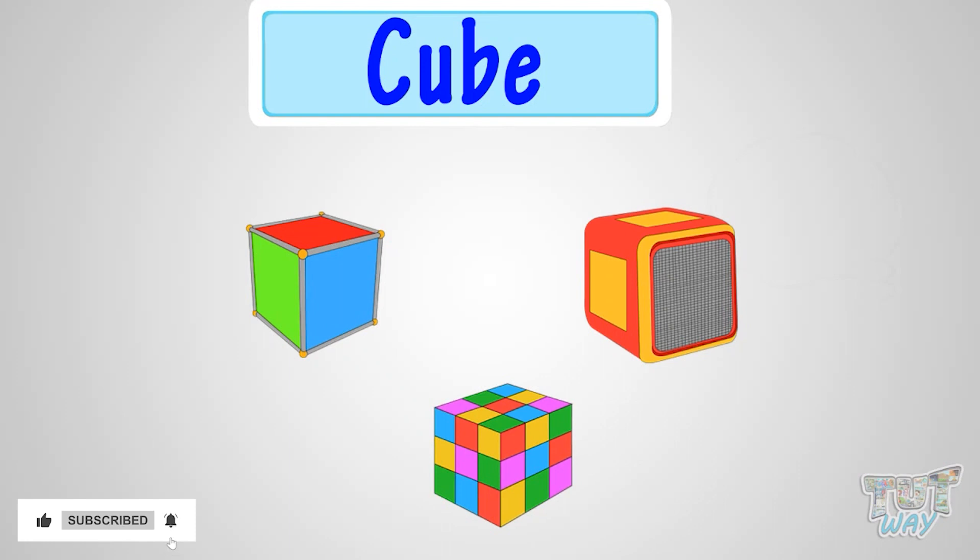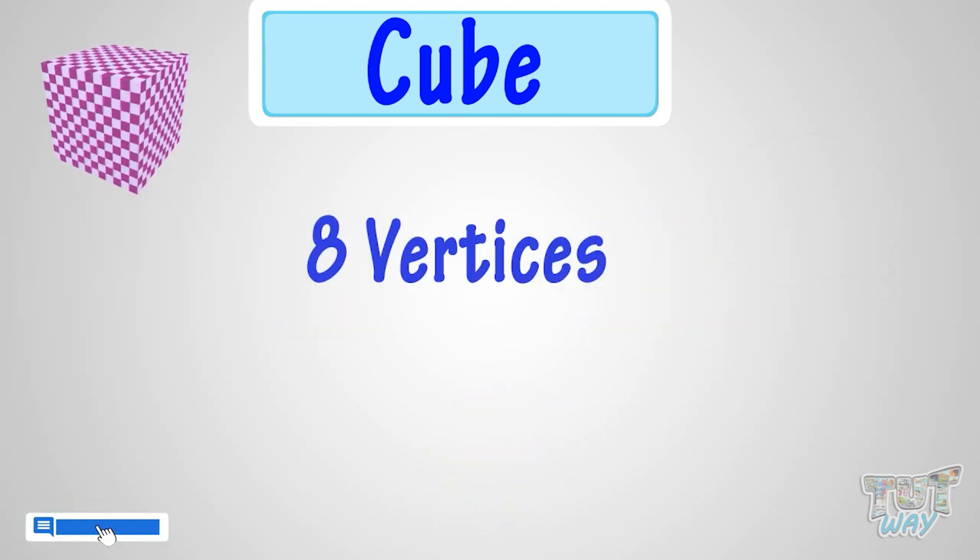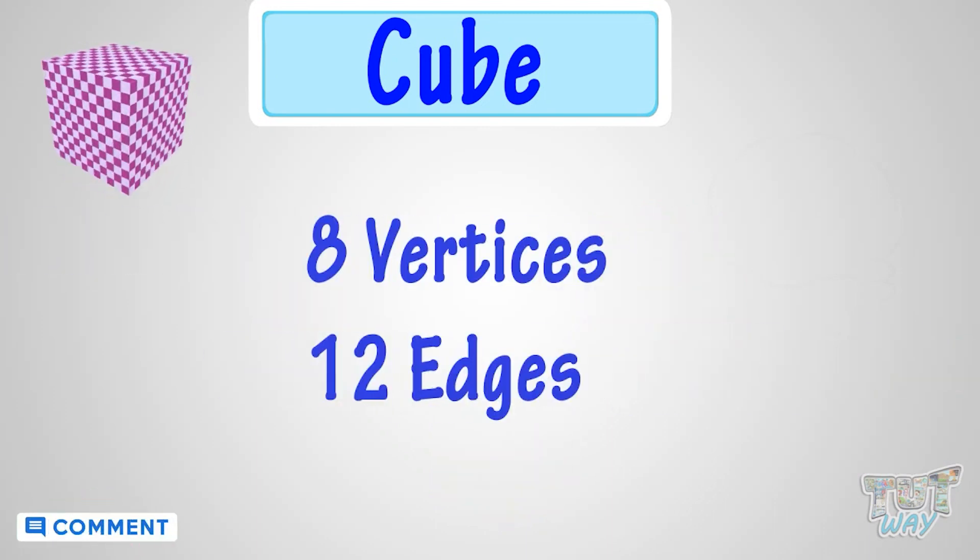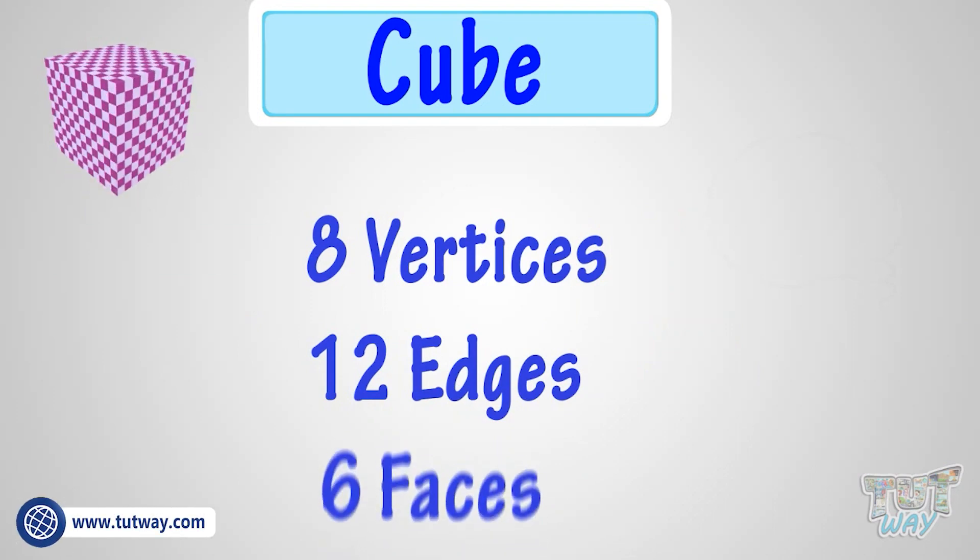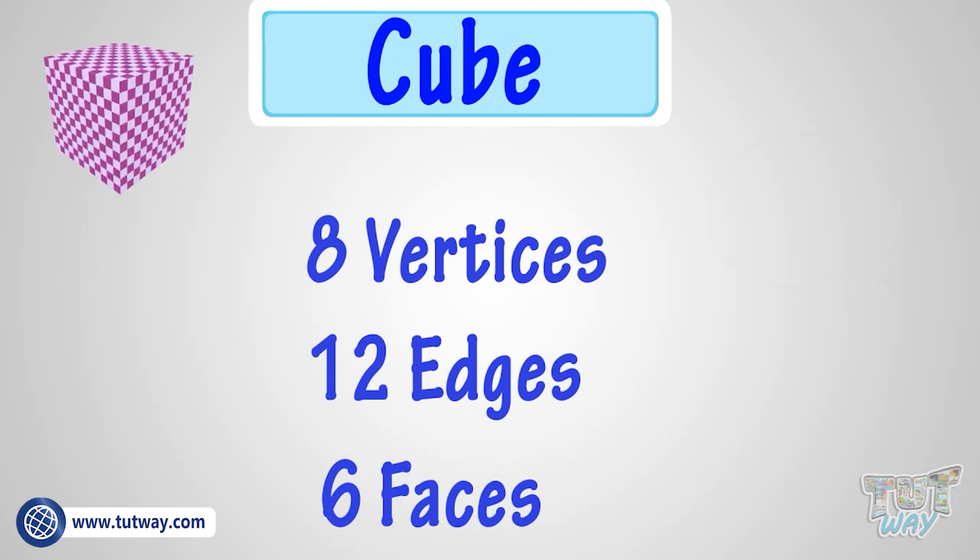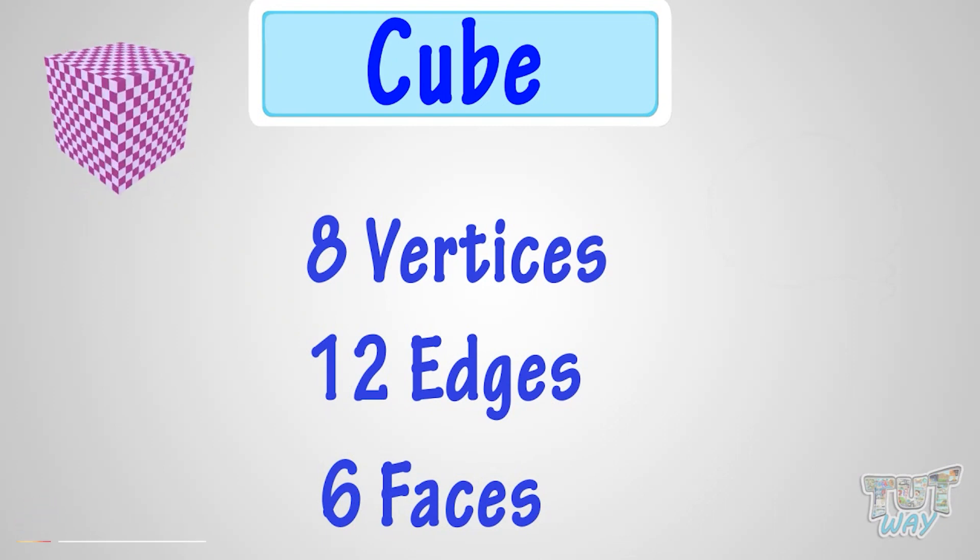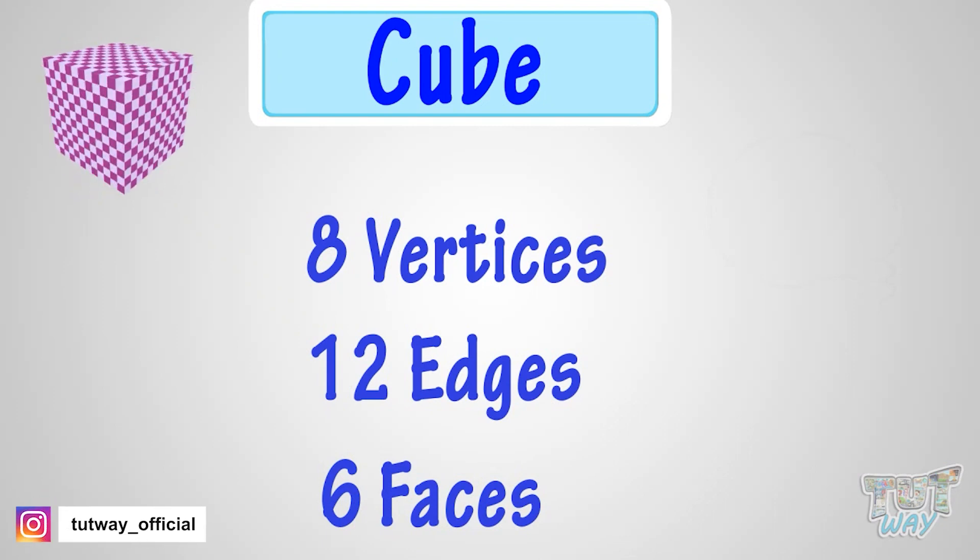So what have we learned? We have learned that a cube has 8 vertices, 12 edges, which are all equal, and 6 faces, which are all equal and square in shape. Good!